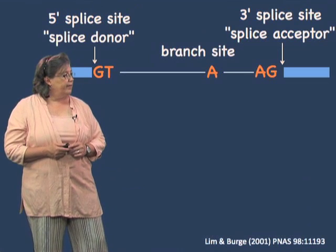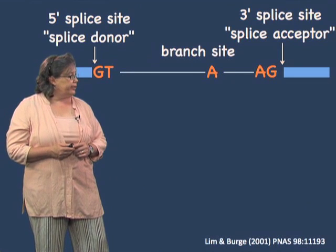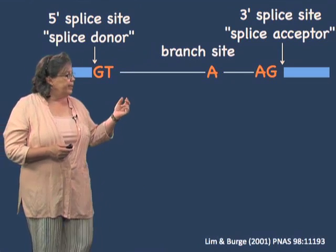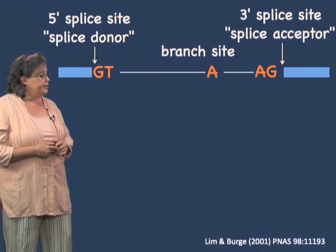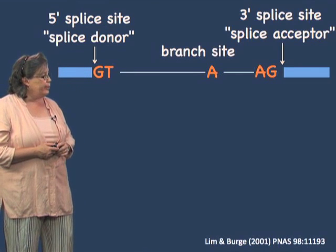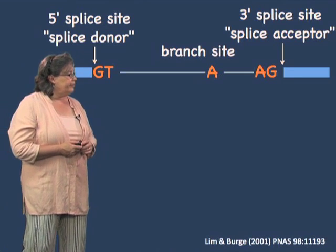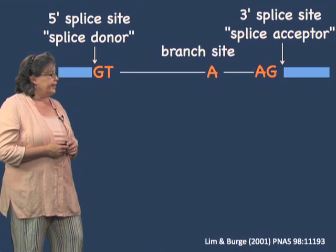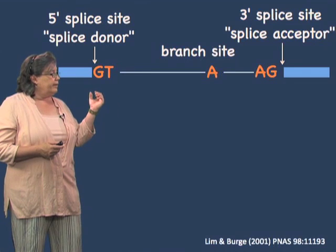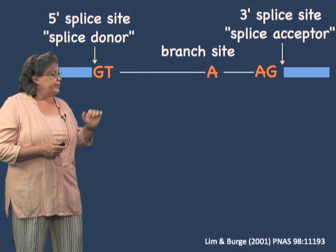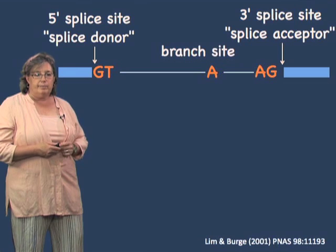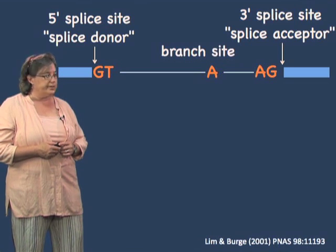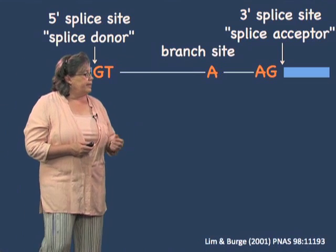Introns have the following structure. The 5' end, or the beginning of the intron, is sometimes called a splice donor, but splicers tend to call it the 5' splice site. In 99% of genes, it is signified by GT as the first two nucleotides of the intron.